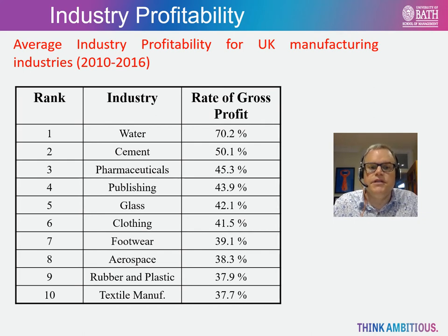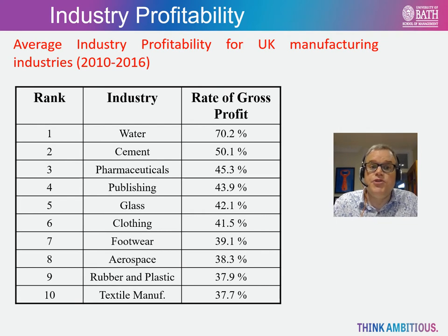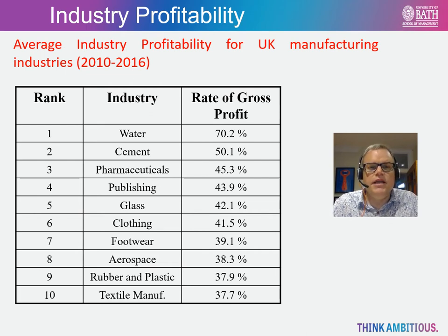For instance, the water industry is effectively organised around several local monopolies. You can only purchase the water that runs your bath or shower from the local water board. And even though the industry is regulated, these water boards can have significant market power. In contrast, in sectors such as textiles, there is much more competition. Indeed, UK firms have to compete in global markets with low cost competitors and therefore profit margins are much lower.